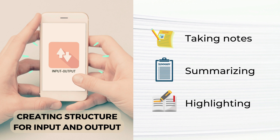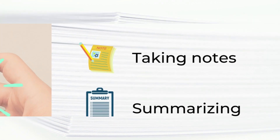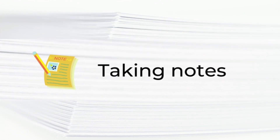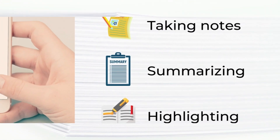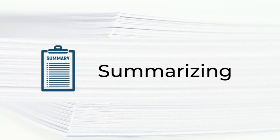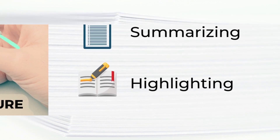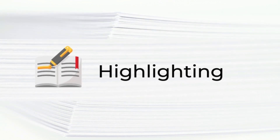The last set is creating structure for input and output. The techniques are taking notes, summarizing, and highlighting. Taking notes entails writing down the main idea or specific points — this strategy can involve raw notes or a more systematic form of note-taking, such as the shopping list format, the T formation, the semantic map, or the standard outline form. Summarizing means making a summary or abstract of a longer passage. Highlighting uses emphasis techniques such as underlining, starring, or color coding to focus on important information in a passage.